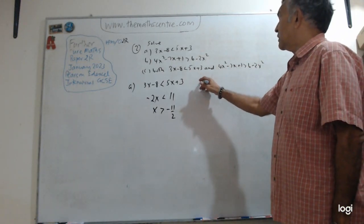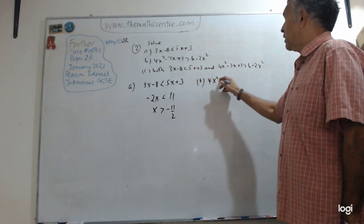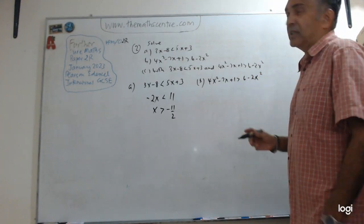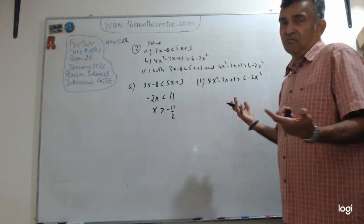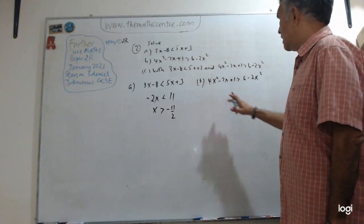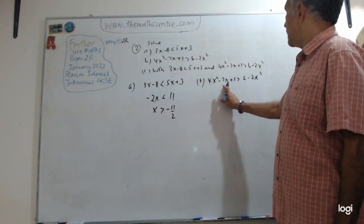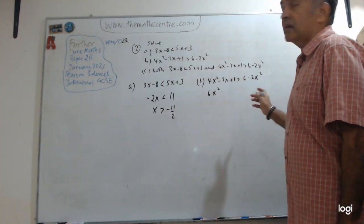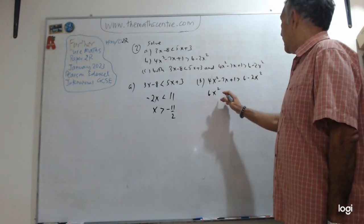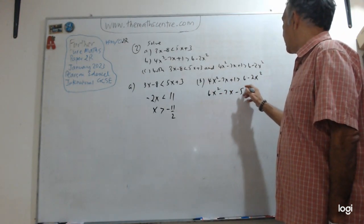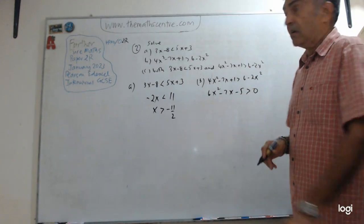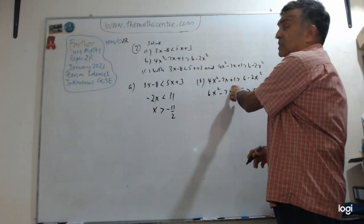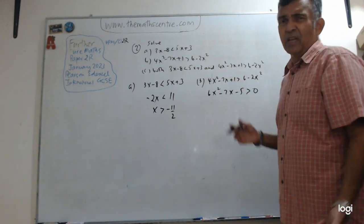4X squared minus 7X plus 1 bigger than 6 minus 2X squared. So this is a quadratic inequality. Just the same method, nothing hard about this. This is 4X squared and minus 7X and 1. Let me just check the question. I have got 6X squared. What did I do? I have got this 2X squared on this side and I have minus 7X and then I have minus 5 bigger than 0. Just clear on the algebra: It's 4X squared plus 2X squared and minus 7X here and 1 minus 6 minus 5. Done.